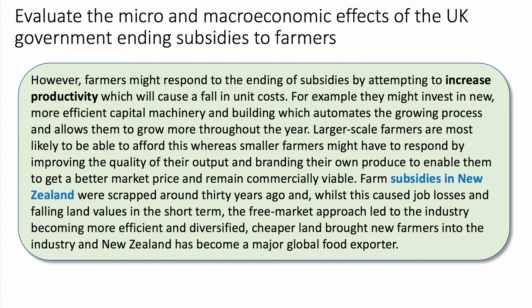In the mid-1980s, subsidies in New Zealand were scrapped — about 30 to 35 years ago. Whilst initially this caused heavy job losses and a big drop in farmland prices, the free-market approach eventually led to the New Zealand farm sector becoming far more productively efficient and diversified. The cheaper land also makes a slightly counterintuitive point: falling land prices make it more affordable for new farmers to enter the sector. New Zealand has since developed significant global comparative advantage in food and is a major food exporter.